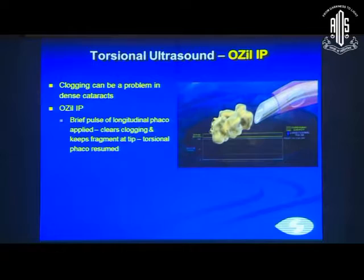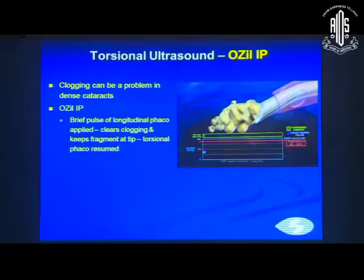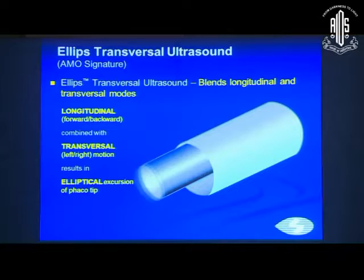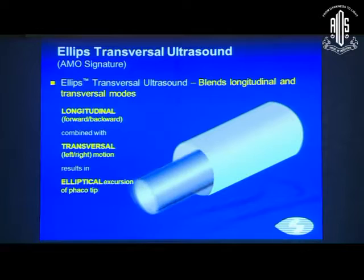Clogging was a problem with torsional ultrasound, and this has been solved with OZEL IP, which gives pre-pulses of longitudinal ultrasound, clears the clogging, and keeps the fragment on the tip, after which torsional phaco is resumed. Elliptical ultrasound blends longitudinal and transverse ultrasound: the forward-backward longitudinal movement combined with left-to-right transversal motion results in an elliptical excursion of the phaco tip.